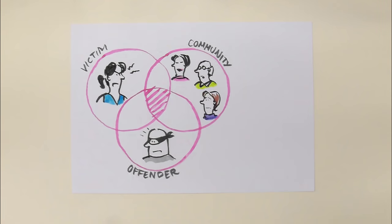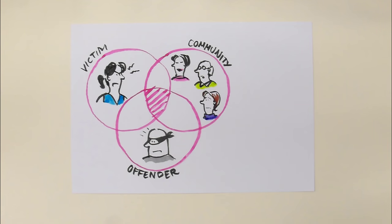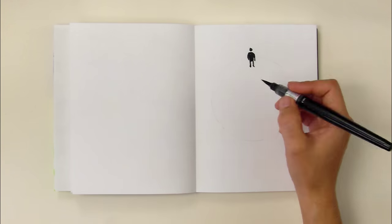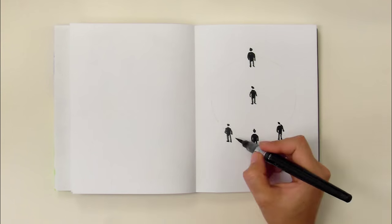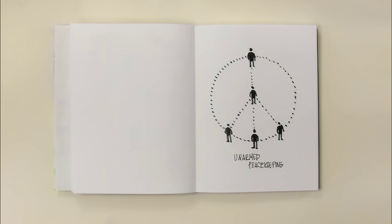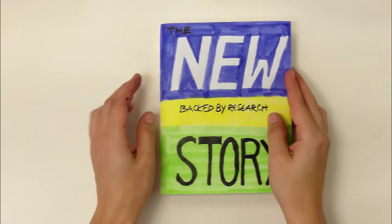This method involves victim, offender, and the whole community. It's effective, cheap, and builds community in the process. And did you know that ordinary citizens with non-violence training are solving conflicts all over the world? It shows we can do things so much differently and better if we change the narrative.